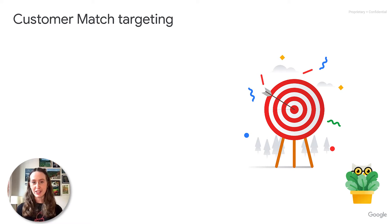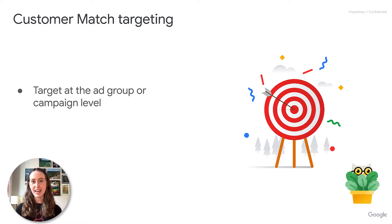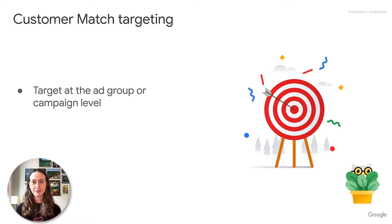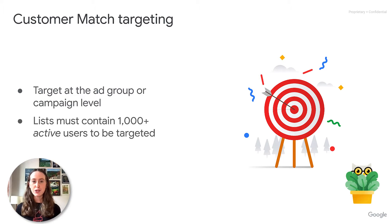Similar to other criteria, customer lists can be targeted at the ad group or campaign level. In order to be targeted, a customer list must contain at least 1,000 active users.